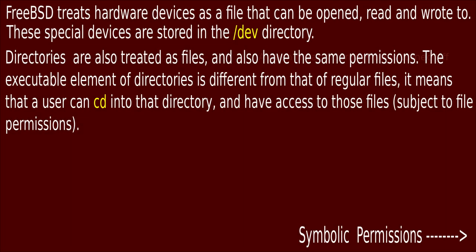FreeBSD treats hardware devices as files that can be opened, read, and written to. These special devices are stored in the /dev directory. Directories are also treated as files and have the same permissions. The executable element of directories is different from that of regular files, in that it means a user can cd into that directory and have access to those files, subject to file permissions.